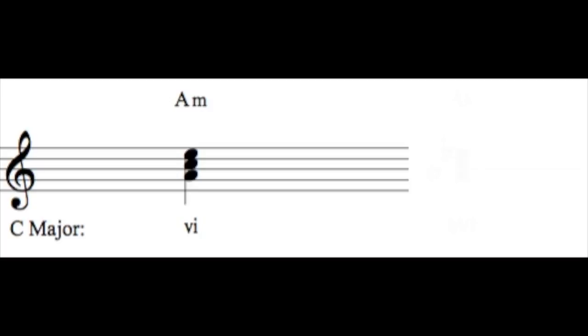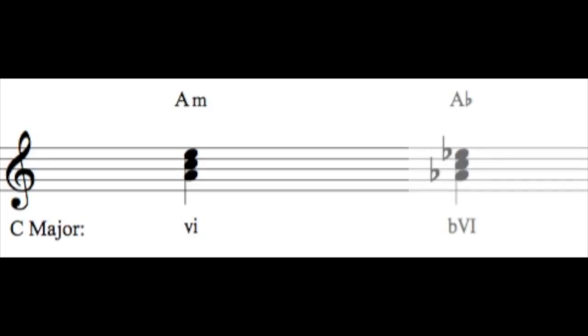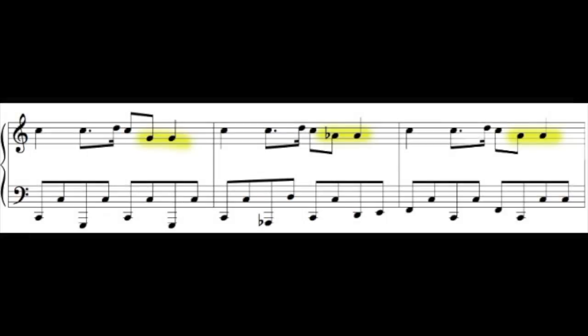Kirkhope is employing a flat six chord. Basically, this takes the sixth chord in a key and lowers the first note and fifth note down a half step, essentially borrowing a chord from a key's parallel minor mode. Here, Kirkhope is just lowering the first note. Using this allows Kirkhope to use the same musical material we've been hearing, but give it a little quirkiness and still progress the music further. As the melodic material stays mostly static, this part of the melodic idea continues up by step.